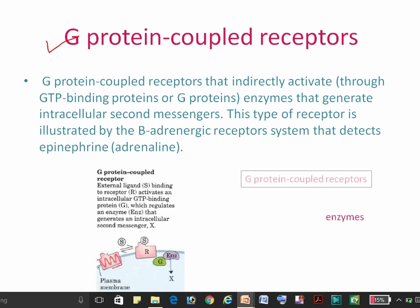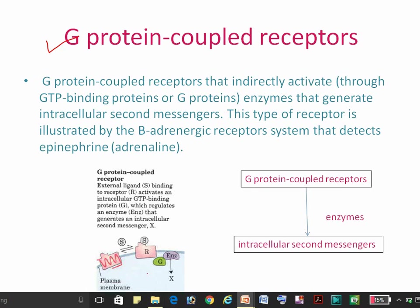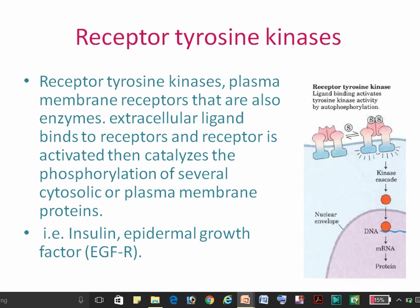The first one is G protein-coupled receptors. In GPCR, the receptor indirectly activates an enzyme, and that enzyme generates intracellular secondary messages. As illustrated in this figure, a ligand binds to the receptor, it activates the GTP-binding protein, that protein regulates the enzyme, and the enzyme generates the secondary messenger.